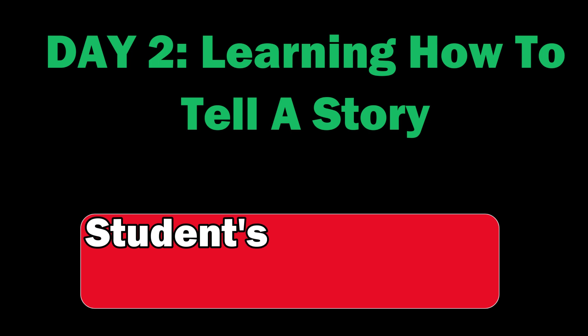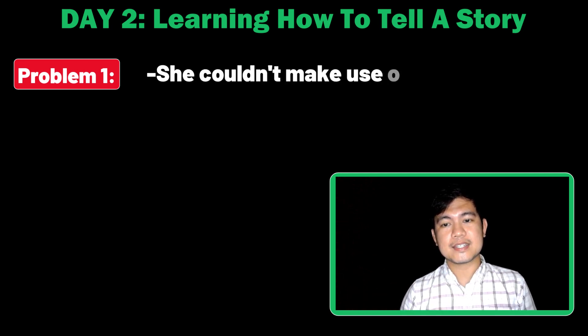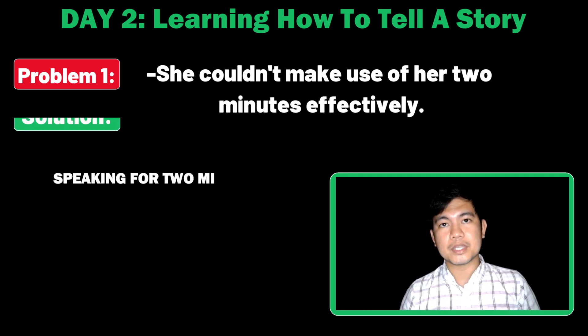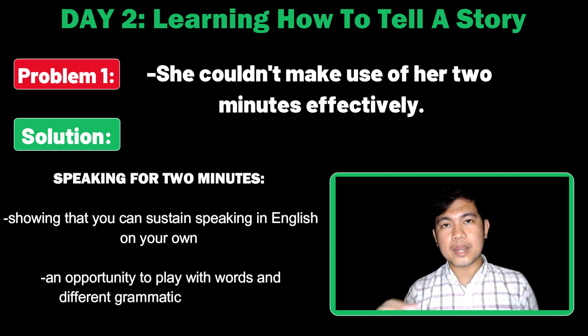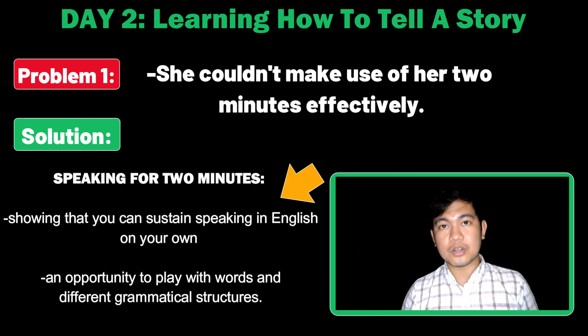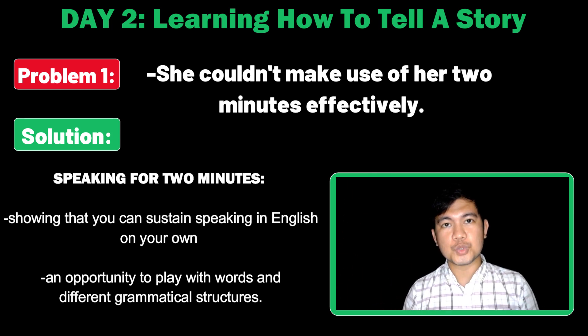Day 2: Learning Part 2, or Learning How to Tell a Story. Here are the issues and the solutions. She is able to speak at length; however, she couldn't make use of her 2 minutes effectively — in other words, she didn't speak for 2 minutes. That's acceptable in the IELTS speaking test as long as the monologue is not below 1 minute. However, in my class, I always encourage my students to speak for 2 minutes because it's their great opportunity to show their oral communication skills to their examiner and demonstrate that they can sustain speaking in English on their own for 2 minutes. So I really wanted her to speak for 2 minutes, making sure that she could utilize her oral communication skills more.